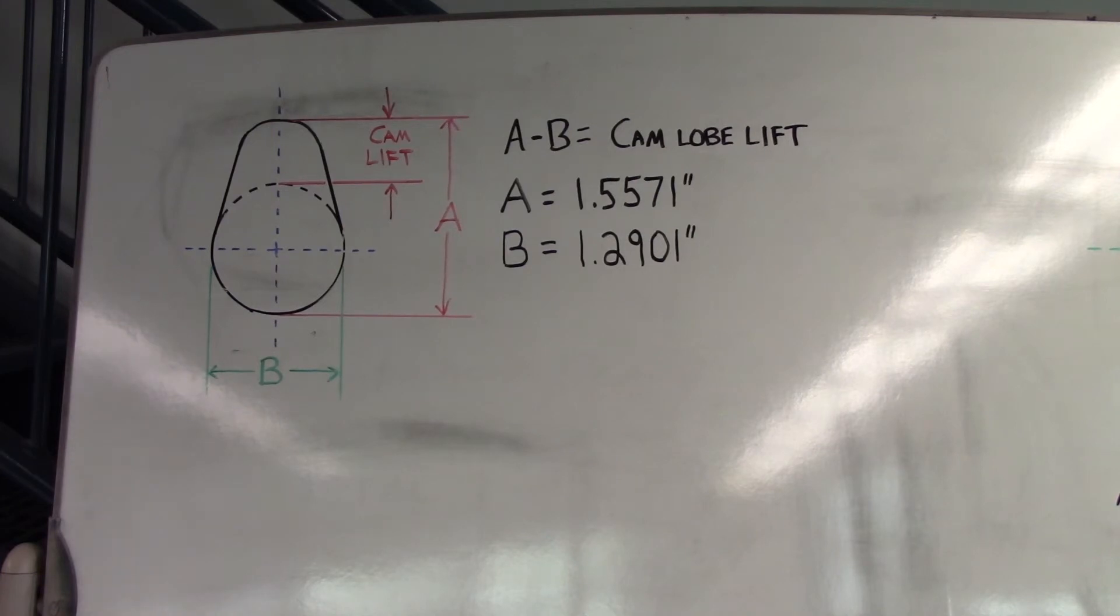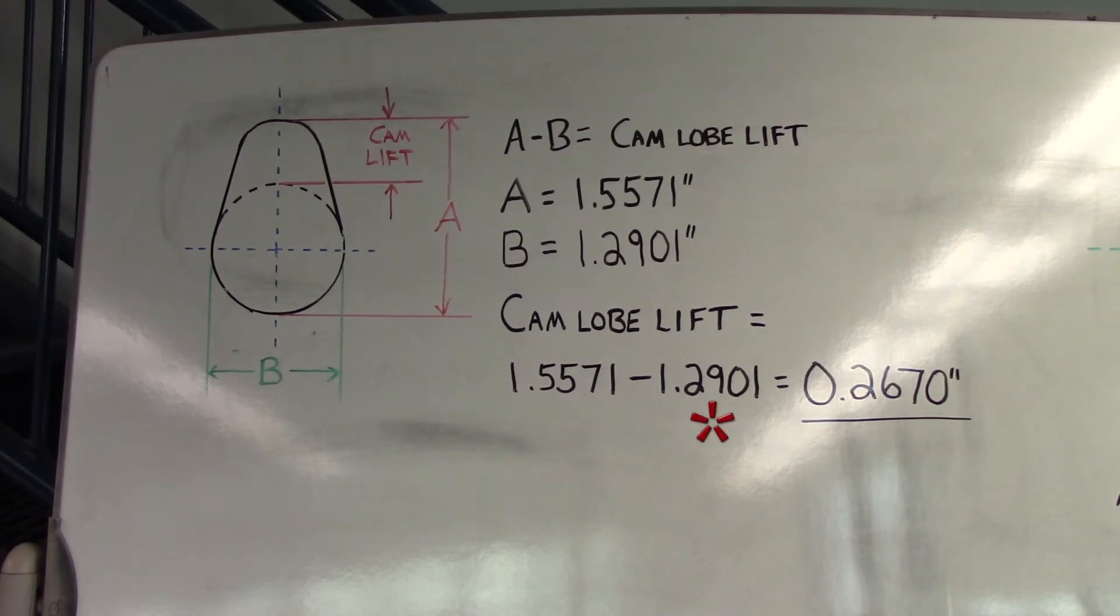To calculate lobe lift, your calculations will look like this: dimension B, 1.2901 inches, is subtracted from dimension A, 1.5571 inches. This gives us a cam lobe lift total of 267 thousandths of an inch, or 0.0267 inches. Record the results of your calculations in your workbook.